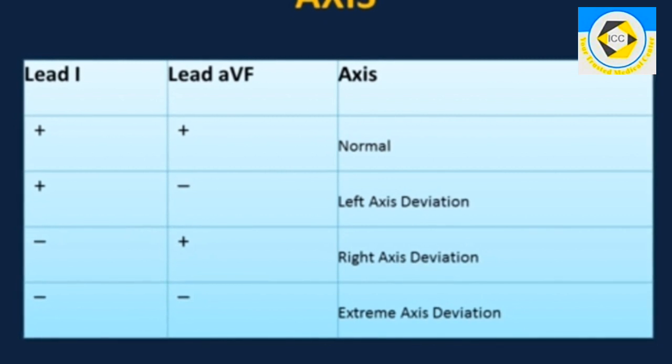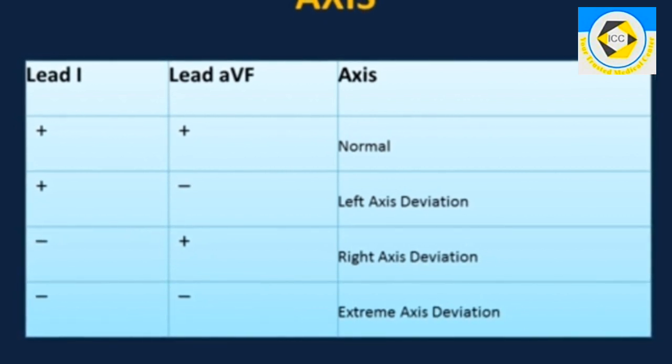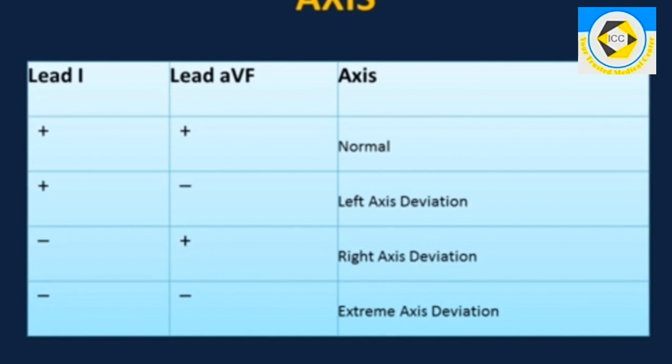If QRS complex is positive in lead 1, negative in AVF, then left axis deviation.